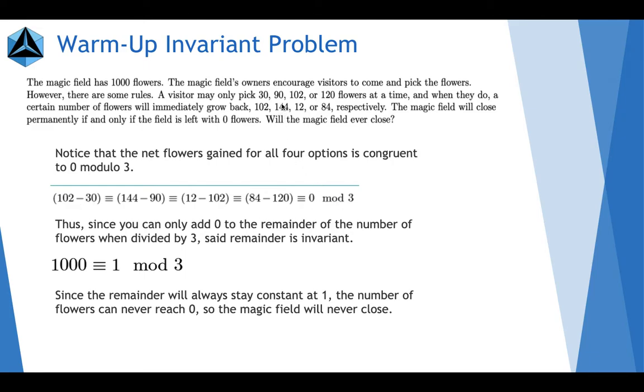Second one, 144 minus 90, 54 net flowers, 0 modulo 3. The third one, 12 minus 102, negative 90 net flowers, 0 modulo 3. Since you can only add 0 to the remainder of the number of flowers when divided by 3, the remainder is invariant.